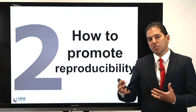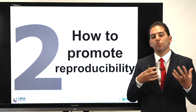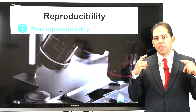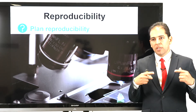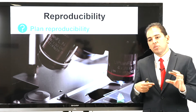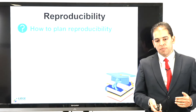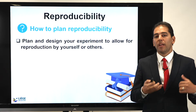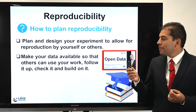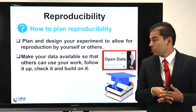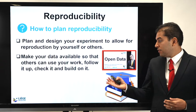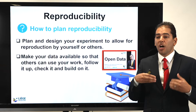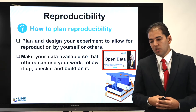Now let's go to some applied ways of how to produce and promote reproducibility in your work. First of all, you need to plan it. When you are designing your research from day one, you need to think about reproducibility and introduce it in different stages of your research. You need to plan and design your experiment to allow reproducing your work by yourself first and maybe by others at a later stage. You also need to make sure that your data is available so that others can use your work, follow it up, check it, and build on it. I advise you to watch the video about open data where I share insights on how to publish your dataset and make it available in deposit repositories so that others can reproduce your results using the same dataset.